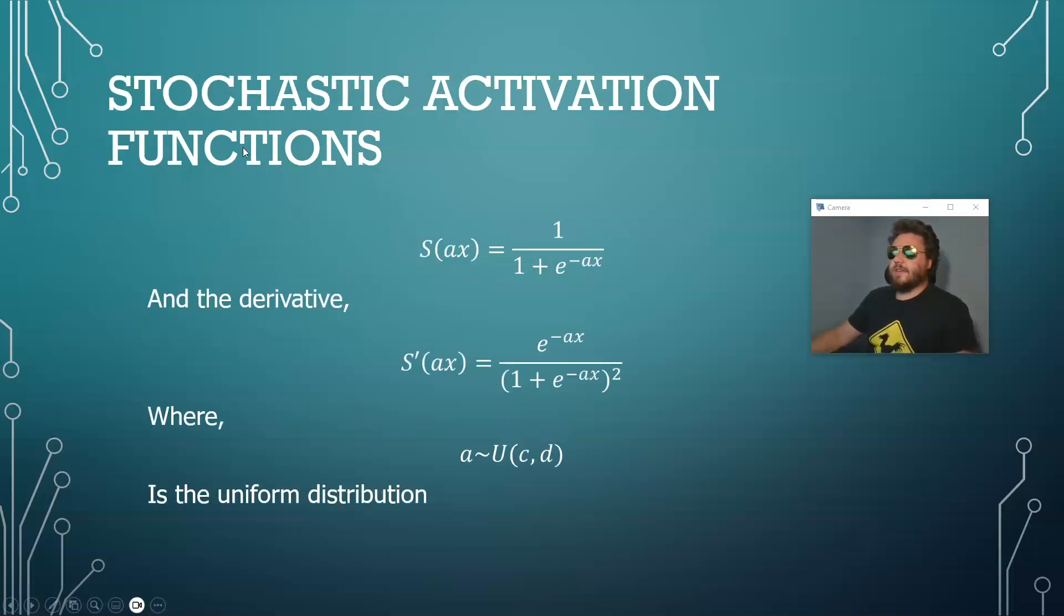So the stochastic activation functions take the form of s(a,x) where a is a random variable and we have this 1 divided by 1 plus e to the negative ax and then you have s'(ax) and the derivative is such right here.